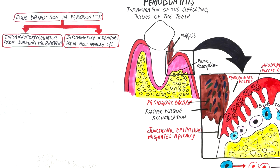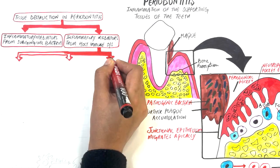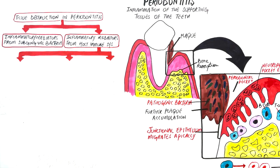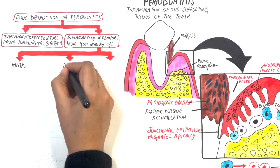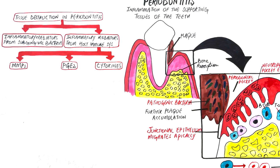The immune-related inflammatory mediators involved in periodontal breakdown are the matrix metalloproteinases or MMPs, prostanoids — the most important of which is PGE2 or prostaglandin E2 — and cytokines.